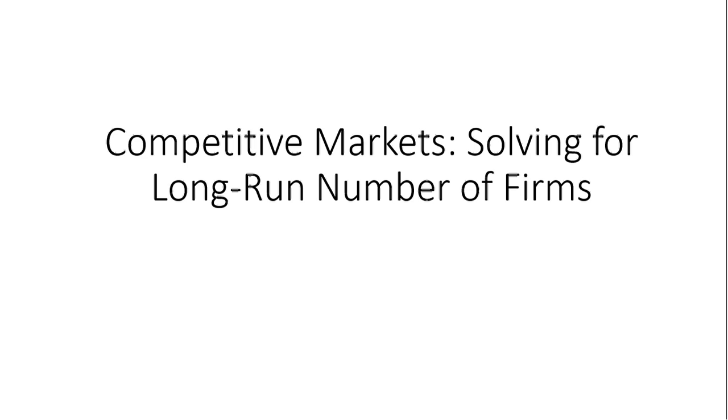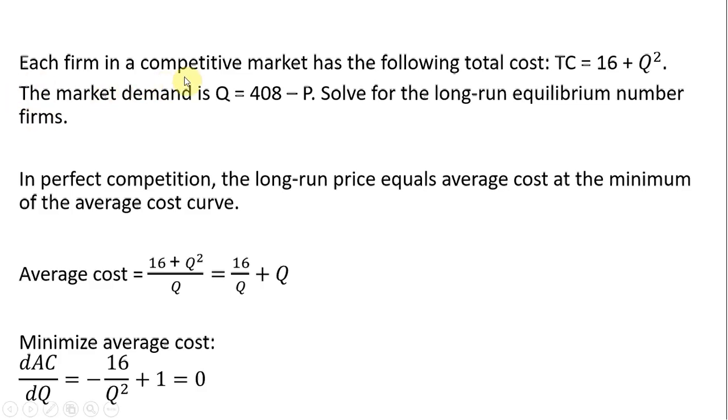Hello. In this video, I'm going to solve for the equilibrium number of long-run firms in a competitive market. We have each firm in a competitive market with the following cost structure: 16 is fixed cost, Q squared represents variable cost.